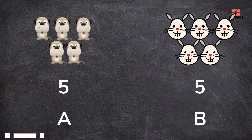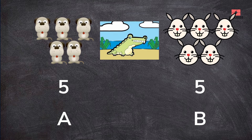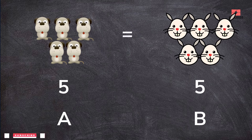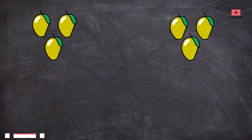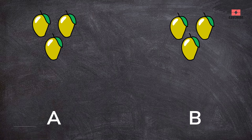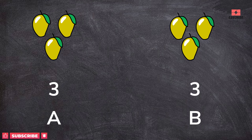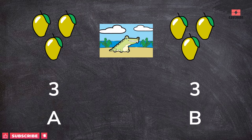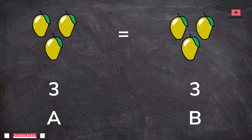The number of dogs and rabbits is the same, so the crocodile is confused as to which number to eat and will not open his mouth. Look at the pictures A and B. A has three mangoes and B also has three mangoes. Both have the same number of mangoes.